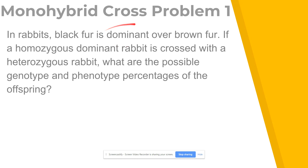The opposite of dominant is going to be recessive. In this case, brown fur is going to be the recessive allele, and that is the allele that is masked whenever it is paired with a dominant one. The only way for a recessive allele trait to be expressed is if you have two recessive alleles together. We represent a dominant allele with a capital letter and a recessive allele with a lowercase letter.